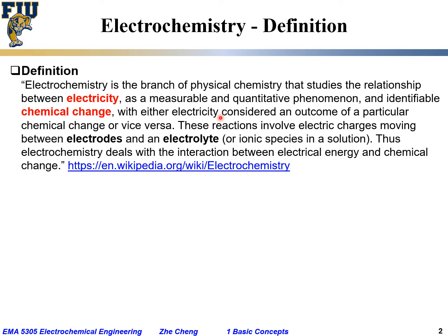For example, if we check Wikipedia, it says electrochemistry is a branch of physical chemistry that studies the relationship between electricity — as a measurable and quantitative phenomena — and identifiable chemical change. The relationship results in electricity considered either as an outcome of a particular chemical change or vice versa. These reactions involve electric charge moving between electrodes and an electrolyte — an ionic species in a solution.